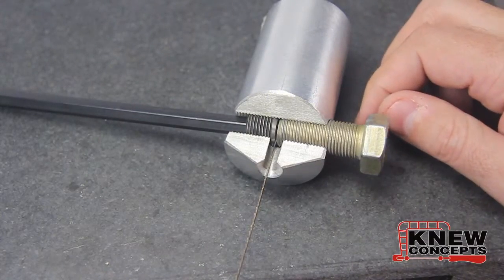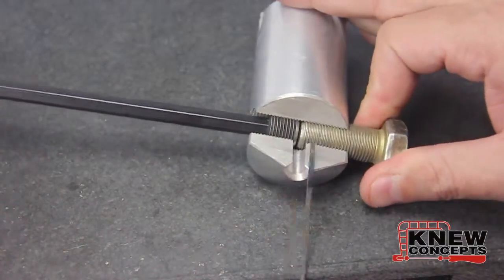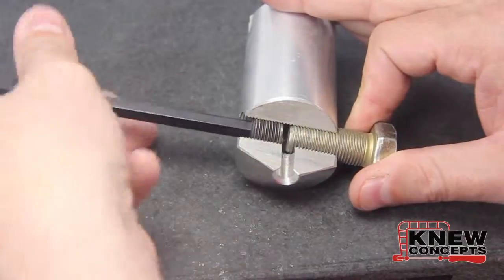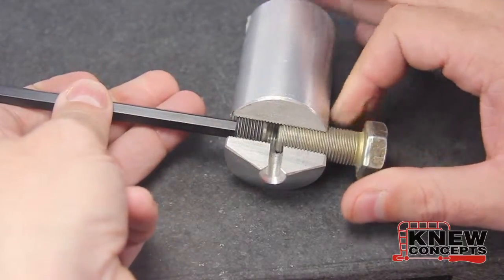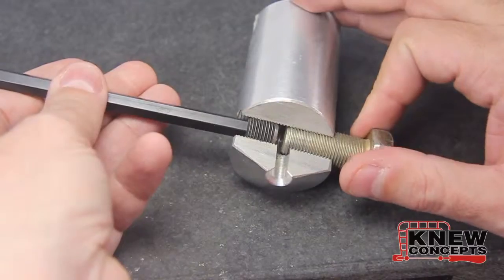And if it's bending or breaking your blades, what's going on is that the anvil screw is out too far. So bring it in. That's all you have to do.